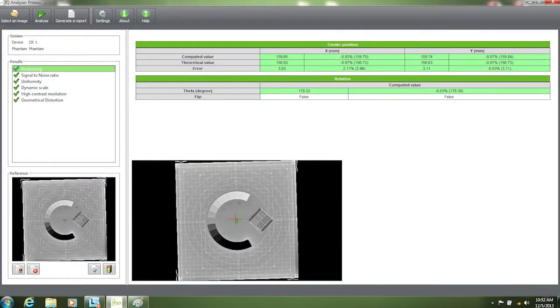The IQ analyzer Primus allows you to do image quality in three simple steps. First you select, then you analyze, and then you report.